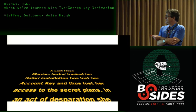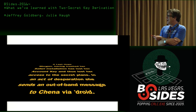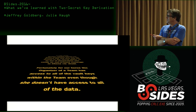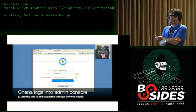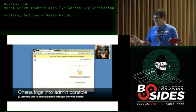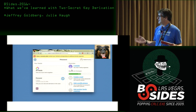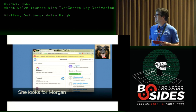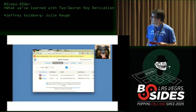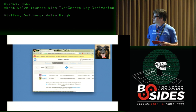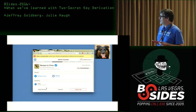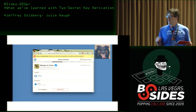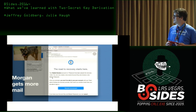Morgan, having trashed her Safari installation, has lost her account key and thus lost her access to the secret plans. In desperation she sends an out-of-band message to Chena. Fortunately, the organizer has access to all vault keys. Chena goes into the admin console, sees Morgan, and clicks 'begin recovery.' That sets Morgan's account into a particular state and sends email to Morgan about the road to recovery.